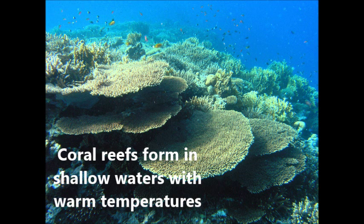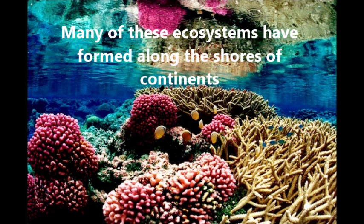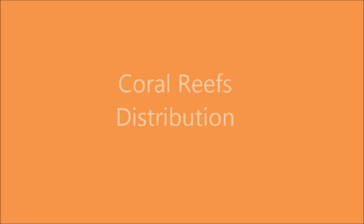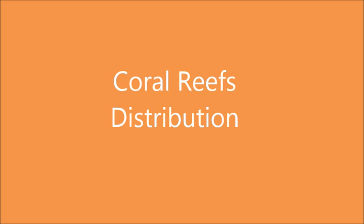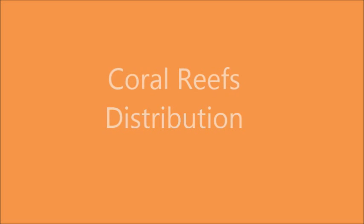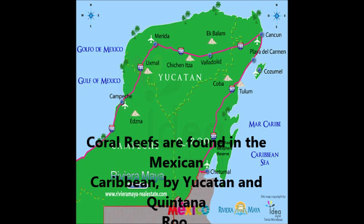Coral Reefs. Coral reefs form in shallow waters with warm temperatures. Many of these ecosystems have formed along the shores of continents. Coral Reefs Distribution: coral reefs are found in the Mexican Caribbean, by Yucatan and Quintana Roo.